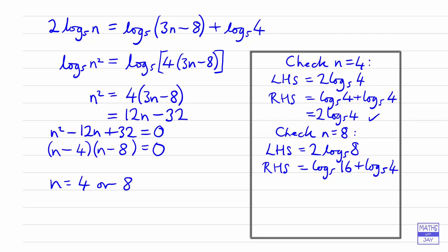So the check here isn't quite as simple as the previous one. We could simplify this by multiplying together the 16 and the 4. So that gives us 64. And we could then rewrite 64 as 8 squared. So that can then be written as 2 log to base 5 of 8, which is the same as the left hand side. So we have got the correct answers.